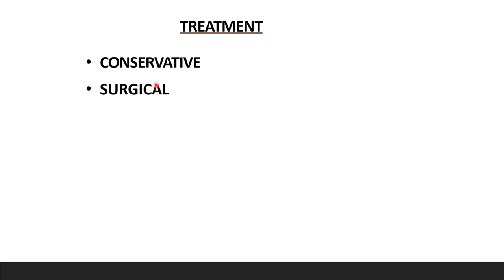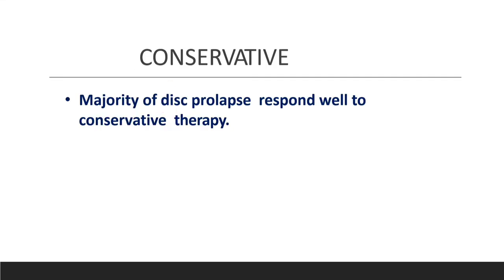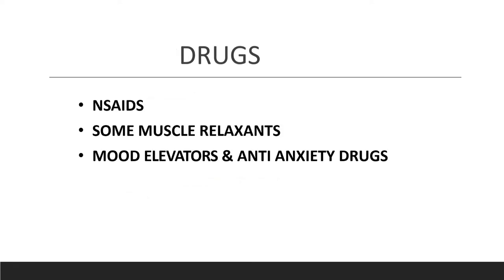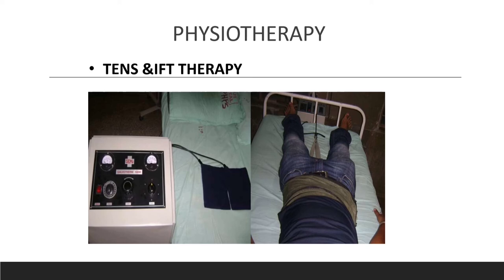Treatment includes surgical and conservative options. The majority of disc prolapse cases settle with conservative management. Conservative treatment starts with bed rest — advising the patient to keep a pillow between the legs in lateral position, or under the knees in supine position, to relax the hamstrings. Medications include NSAIDs, muscle relaxants, mood elevators, and anti-anxiety drugs. Physiotherapy such as transcutaneous electrical nerve stimulation and interferential therapy is given for 5 to 7 days.